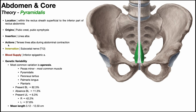The textbook action of the pyramidalis is to tense the linea alba during abdominal contraction in an attempt to brace the core. In reality, this muscle probably serves more of a proprioceptive role. The evidence for this is, first, the muscle is incredibly small and cannot compare in force to other core muscles like the transversus abdominis and the obliques. Second, many individuals are born without this muscle — it's one of the most common muscles to undergo agenesis.